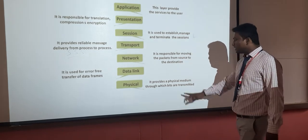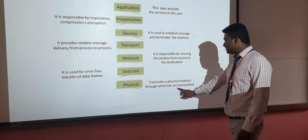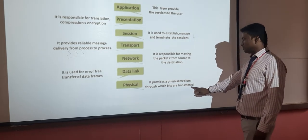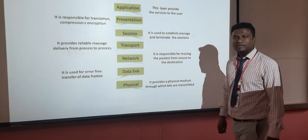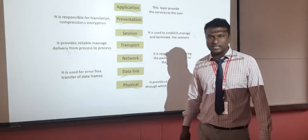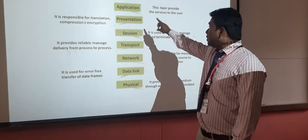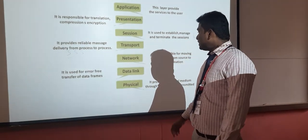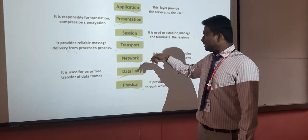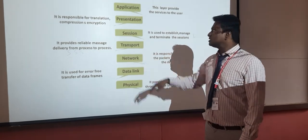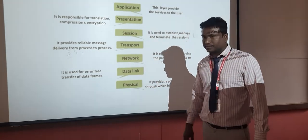The physical layer provides a physical medium through which bits are transmitted. These are the seven layers of the OSI model. We will now see each layer in detail in the coming slides, starting with the application layer.